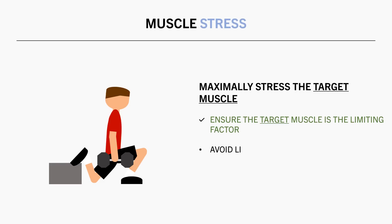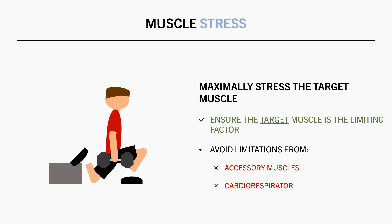And how we achieve this is by ensuring the target muscle is the limiting factor of each set. In other words, if we were to take a set to failure, fatigue of the target muscle should be the factor which hits failure first — not any other muscles, and not the cardiorespiratory system. The limiting factor can be influenced and changed via manipulation of many variables, such as technique and rest periods, but exercise selection also plays a major role.